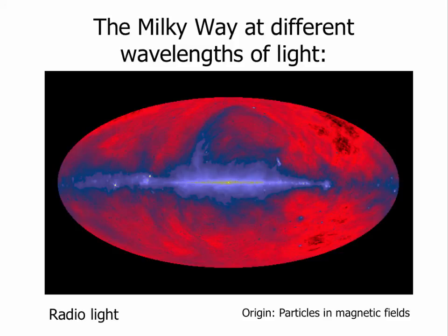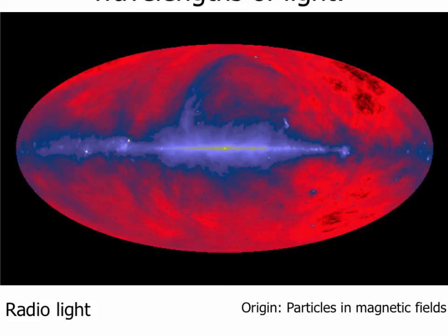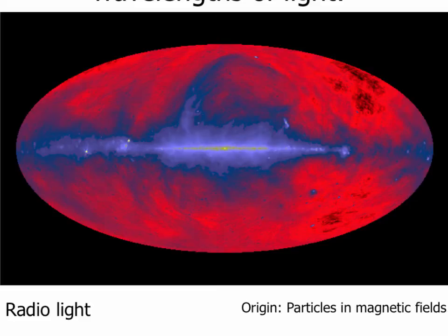Let's start at the longest wavelength: radio waves. Radio waves in our galaxy mostly come from particles trapped in magnetic fields. Stars, supernovae, even the galaxy itself all have magnetic fields. When particles like electrons or protons get caught in those magnetic fields, they emit radio waves. This is a false color image — yellow is the brightest radio waves, red means the fewest. There are a lot of radio waves from the very center of the Milky Way, getting fainter quickly, but you also see big looping structures that we can't see in optical wavelengths. We can learn about many different types of structures by looking at radio waves as opposed to visible light.